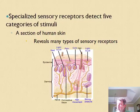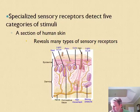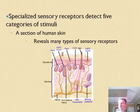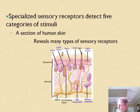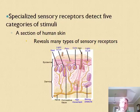Receptors can also be grouped by location: proprioceptors are found inside the body, while exteroceptors pick up information from outside the body. That's another way to categorize sensory information. We'll stop here and continue in the next podcast, where we'll look at major structures like the eyes and ears that pick up this information.